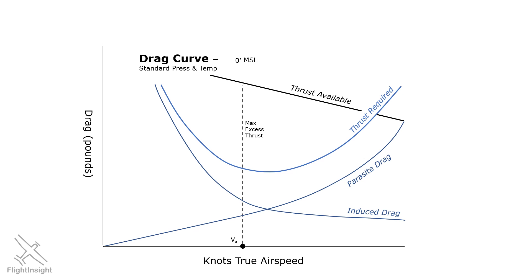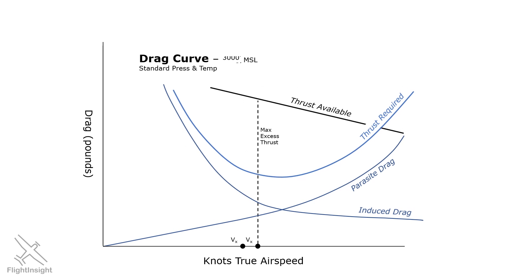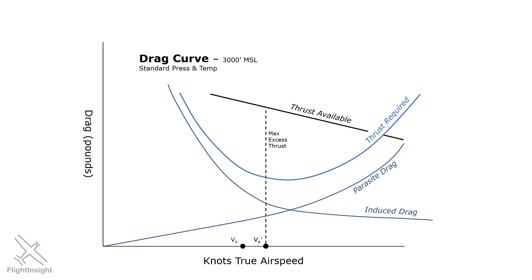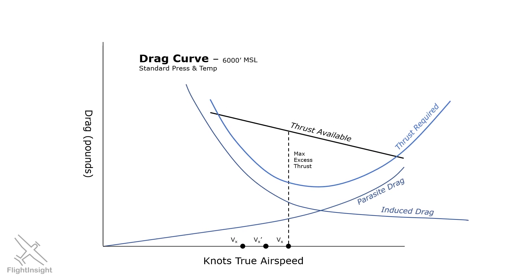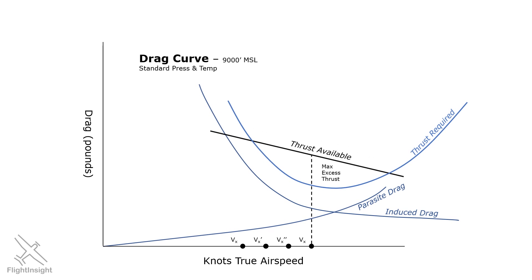What happens as we get higher? We already know drag reduces, but so does thrust, for the same reason — there are fewer air molecules for the propeller to push on. So the VX speeds get higher; we have to fly faster at higher altitudes to get our best angle of climb. We've been dealing with forces — the four forces of flight, which drag and thrust are part of. Forces are expressed in pounds, and these excess forces allow us to climb to altitude in shorter distances traveled, which is what VX is all about.